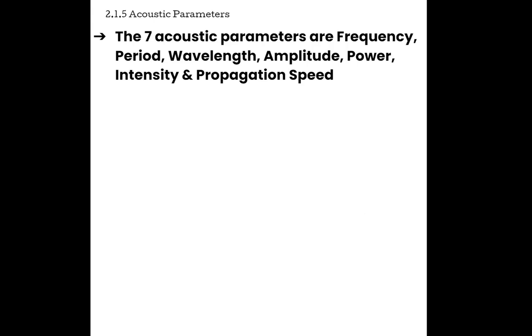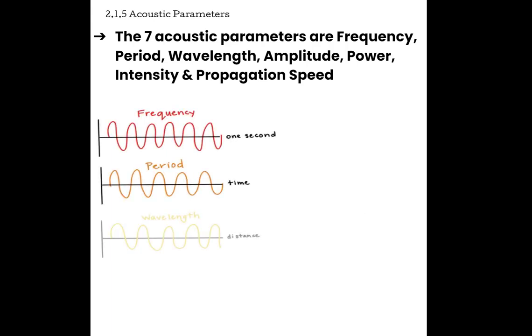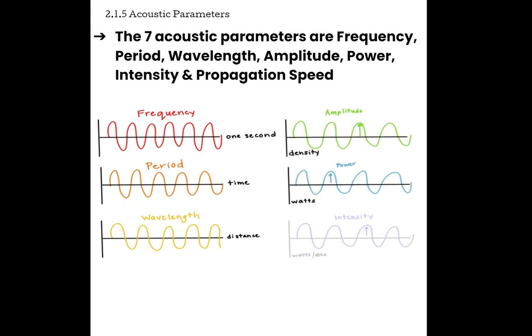Now, there's also seven acoustic parameters to describe sound waves. And those are going to include frequency, period, wavelength, amplitude, power, intensity, and propagation speed. Note that I've got these also expressed in sinusoidal waveforms, but look at the x-axis and the y-axis. Depending on how we define that wave in space changes what our waveform is telling us. We're going to talk a whole bunch more about these seven acoustic parameters in the next unit.